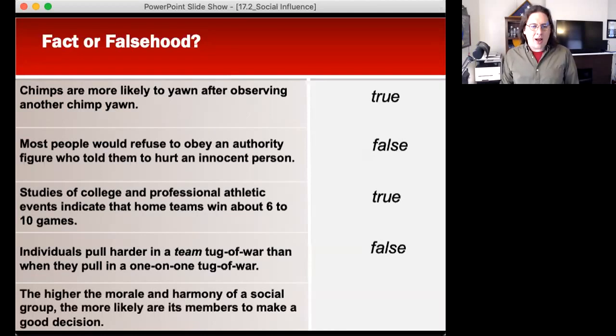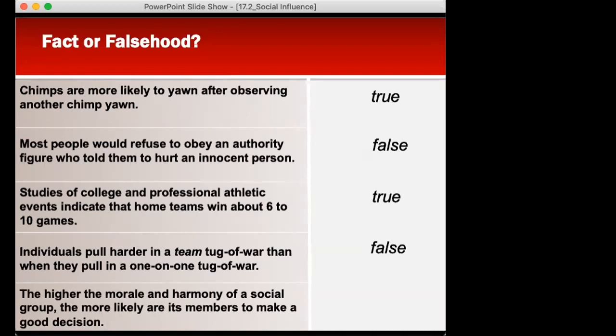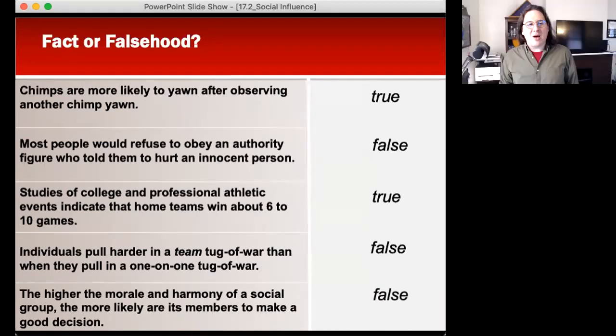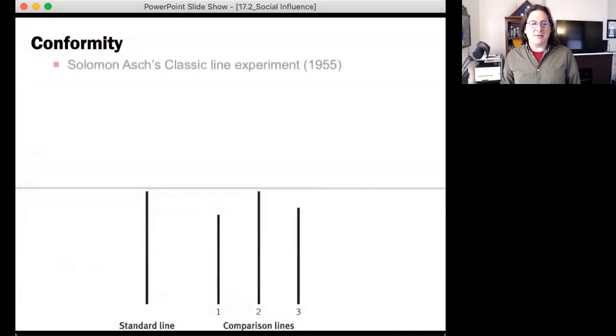The higher the morale and harmony of a social group, the more likely are its members to make a good decision. Nobody thinks it's actually false? The higher the morale and harmony, the more of an identity they take. Their group identity almost gains an arrogance about it, that they can't do anything wrong. We've seen that with Bay of Pigs invasion, the Challenger explosion, probably 9/11.